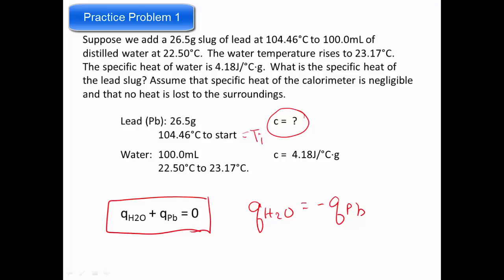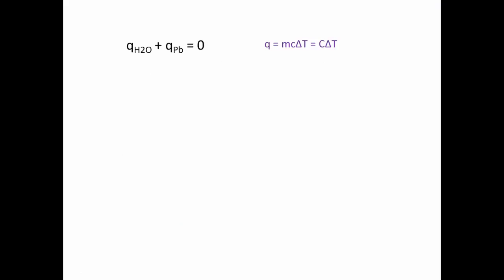So now let's solve this problem. The first thing we need to do is recall that Q is equal to either mcΔT or CΔT. And we're going to substitute in one or the other for each of our terms. We are asked for the specific heat of our lead, so we know that we are going to use this second one.